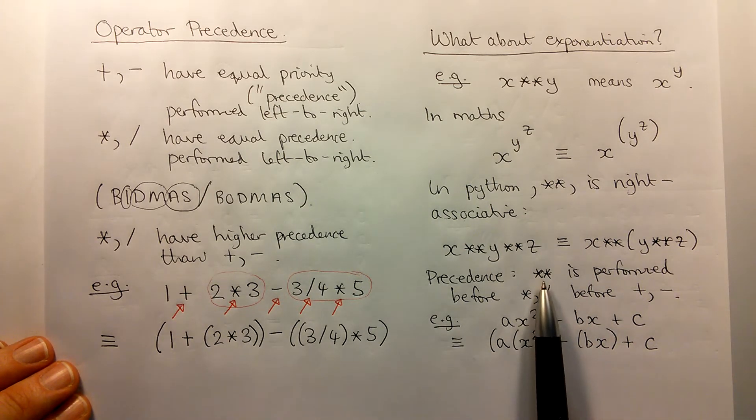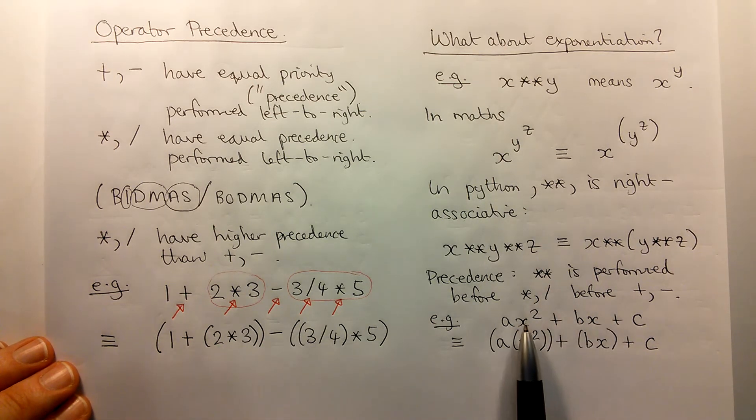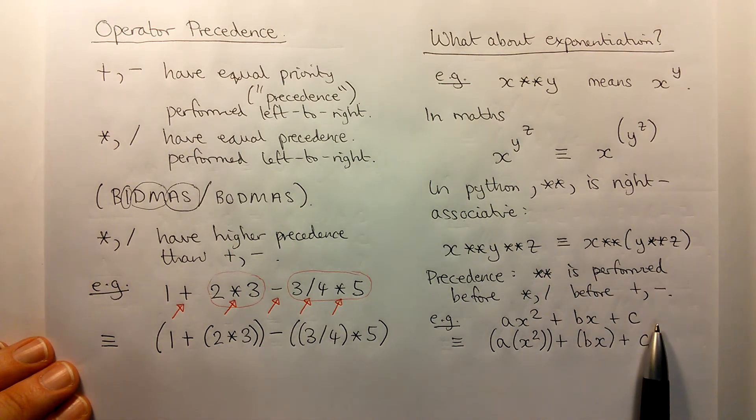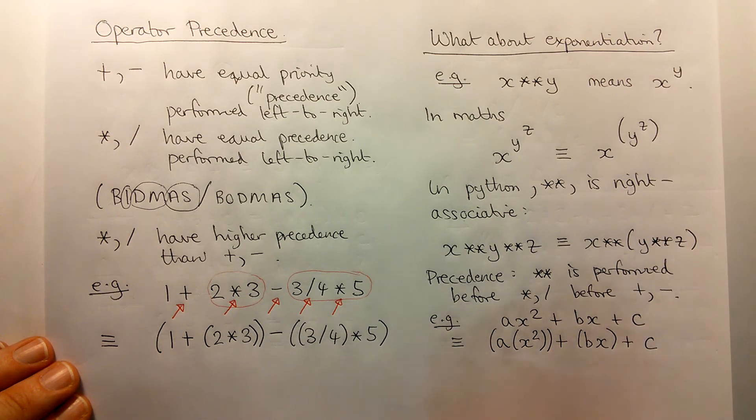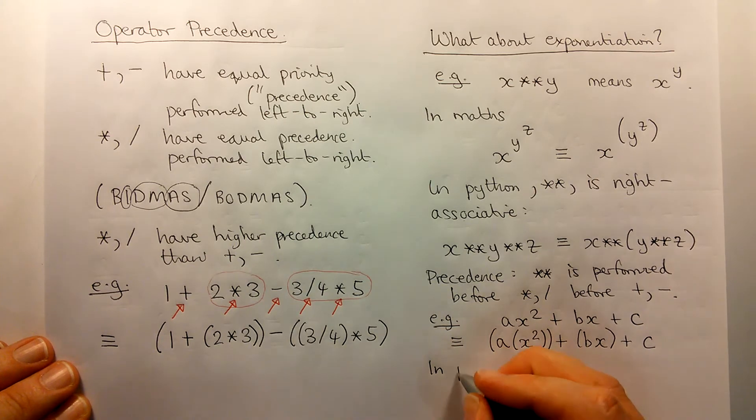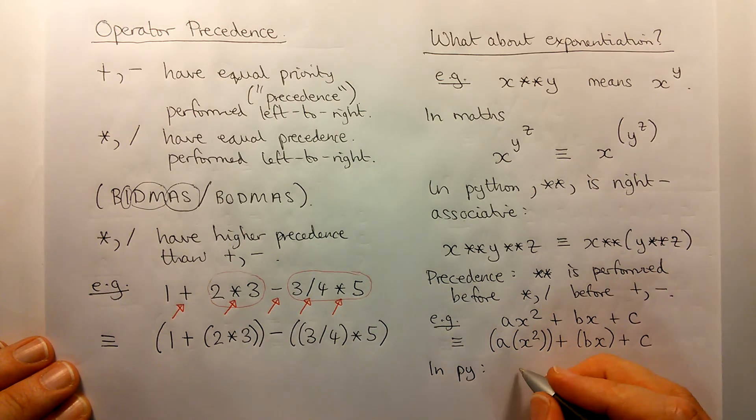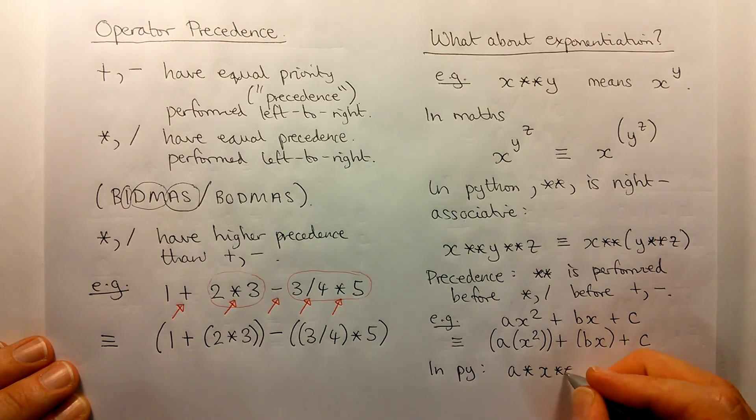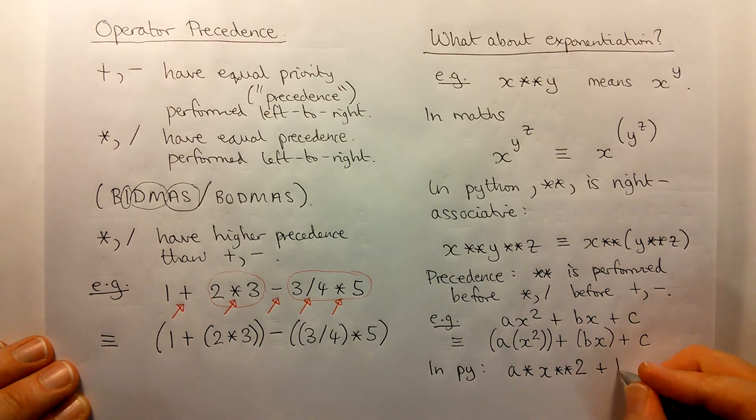So that's the desired behaviour, and making exponentiation have the highest precedence, so that it's done at the very beginning, enables us to write that expression down with no brackets in, and get the meaning that we desire. So this means then that in Python, we can also get away without brackets in that expression.